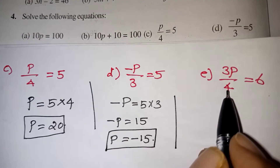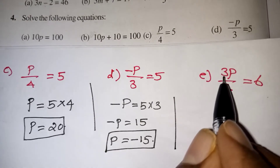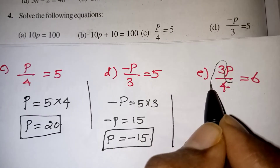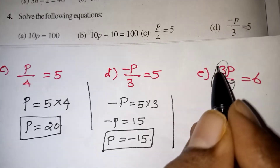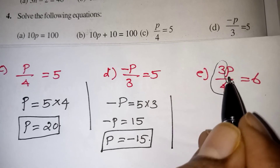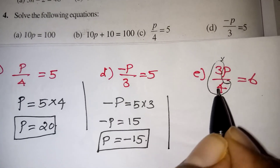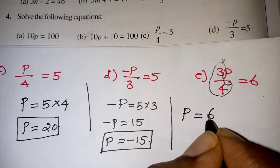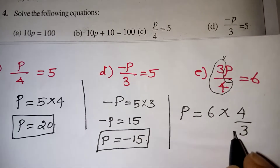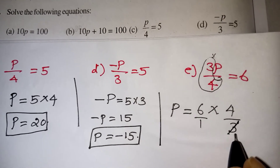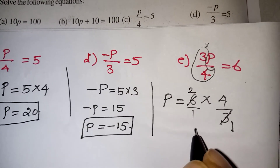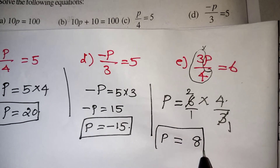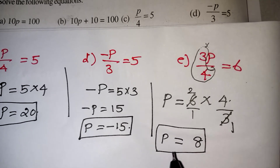Look at one more problem. Here 4 is in the denominator, that will go for multiplication, and 3 is in the numerator, that is in multiplication. So 3 by 4 is a fractional number given in multiplication with p. Whenever you are getting a fractional number in multiplication and taking it to the other side, that will become its reciprocal. So p is equal to 6 multiplied by 4 by 3 — 3 by 4 becomes 4 by 3. The 6 and 3 simplify: 6 divided by 3 is 2, and 2 multiplied by 4 is 8. So p is equal to 8 is your correct answer.